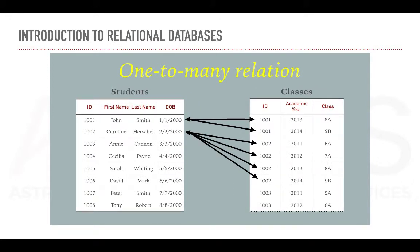Next up, the one-to-many relation. Here we have the same tables that we presented earlier with the students and the classes. In this case, a row from the students table can be associated to multiple rows in the classes table. For example, a student can take multiple classes over multiple years. Therefore, we call this link a one-to-many relation.